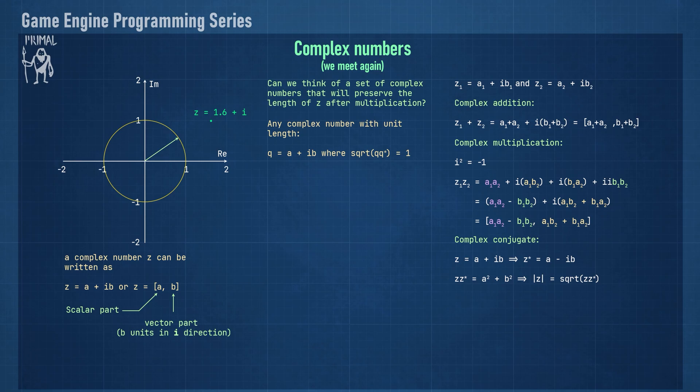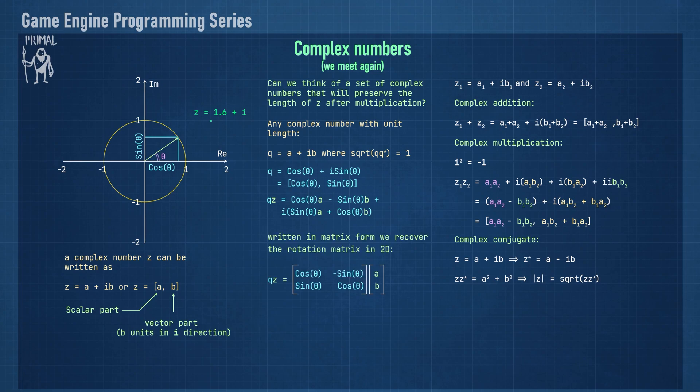These are all complex numbers on the unit circle. The real and imaginary parts of these numbers are given by the cosine and sine of the angle between the vector to each point and the positive real axis. Let's take a number q on the unit circle and multiply it with a complex number z. Writing the result in matrix form, we recovered the 2D rotation matrix from before. So we see that a multiplication by complex numbers on the unit circle is a 2D rotation.